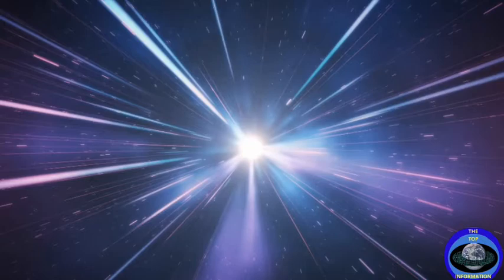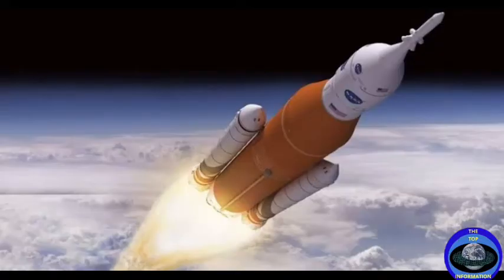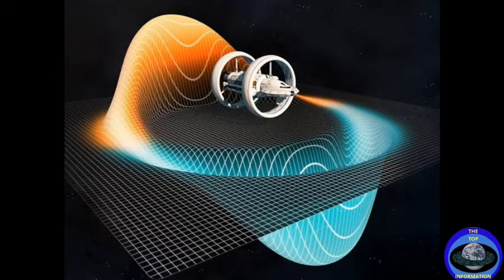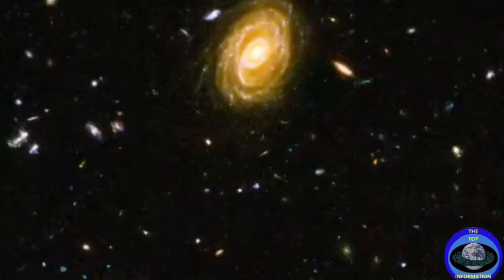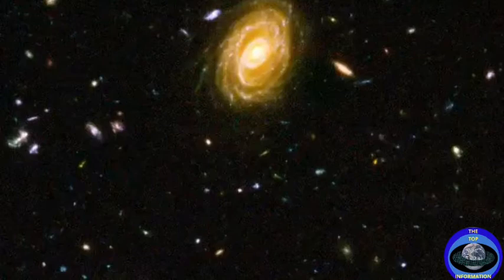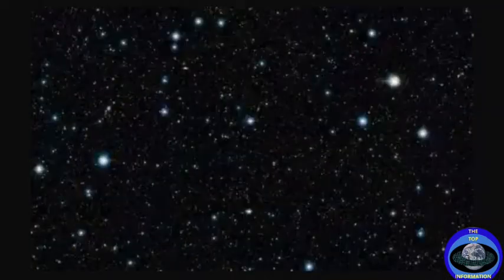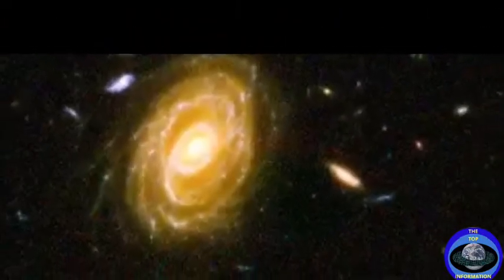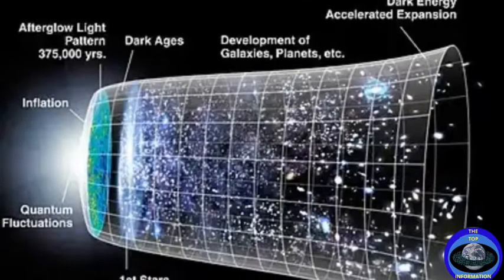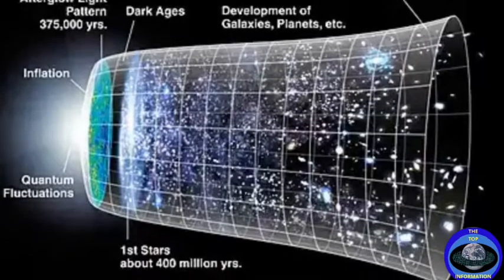Nothing can travel faster than the speed of light, but this speed limit only applies to objects traveling within space. Space itself can travel at any speed, even 10,000 times faster than the speed of light — and we can actually confirm it. Galaxies at the edge of the universe are believed to move away from each other at speeds greater than that of light. We can never see the light coming from those galaxies because it is not that they are moving, but space is moving with them.